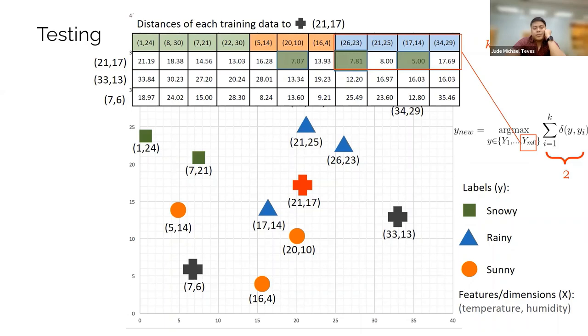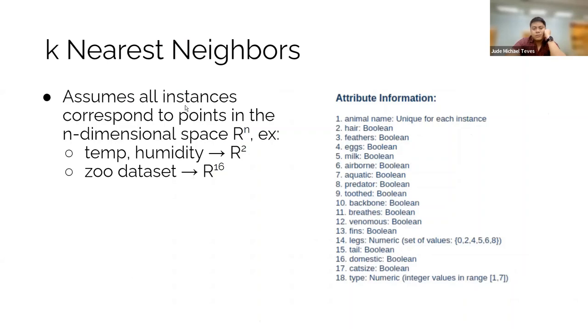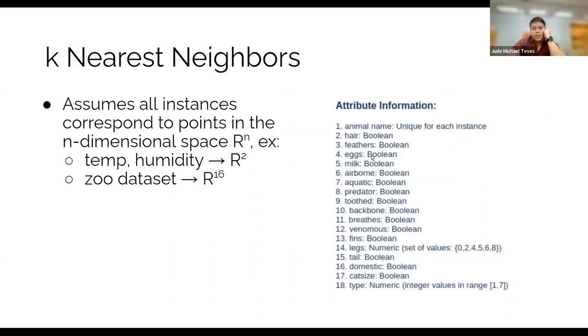However, what if the three nearest neighbors are three distinct classes? Then use the one with the lowest value, the lowest distance. So, okay, let's do it for this other one. It's going to be blue again, obviously, because there are two here. How about this one? It's going to be orange.